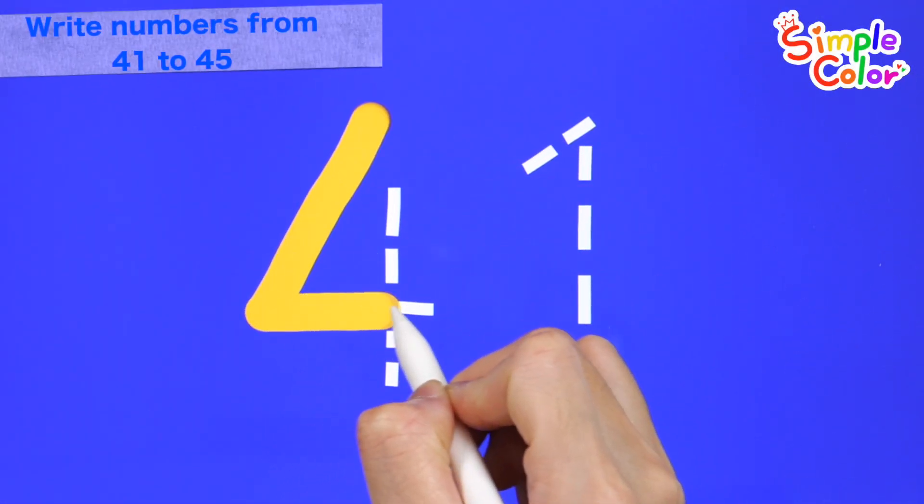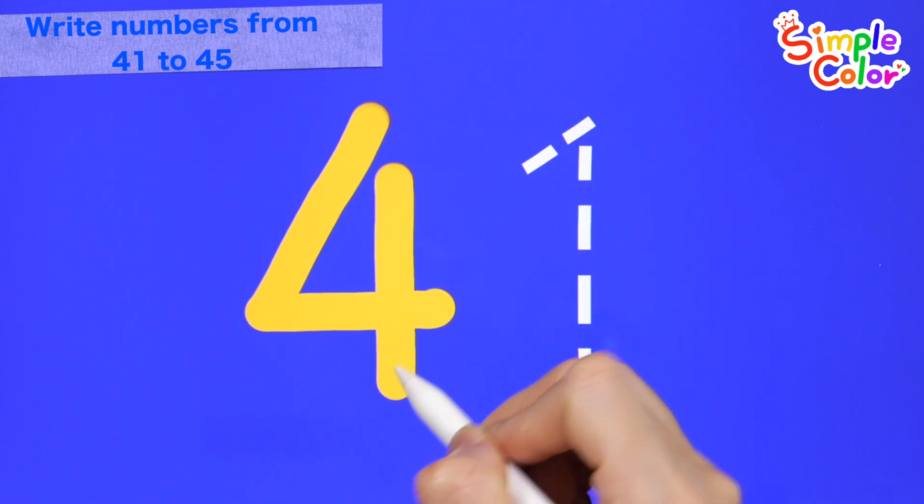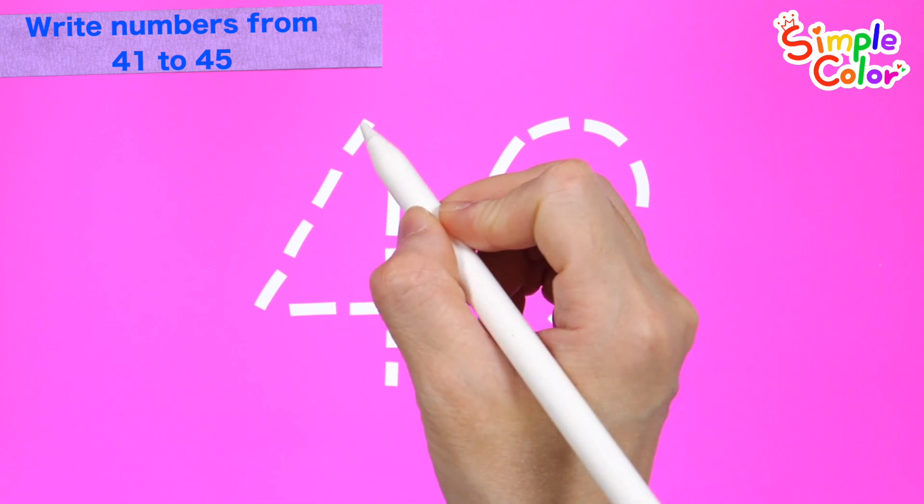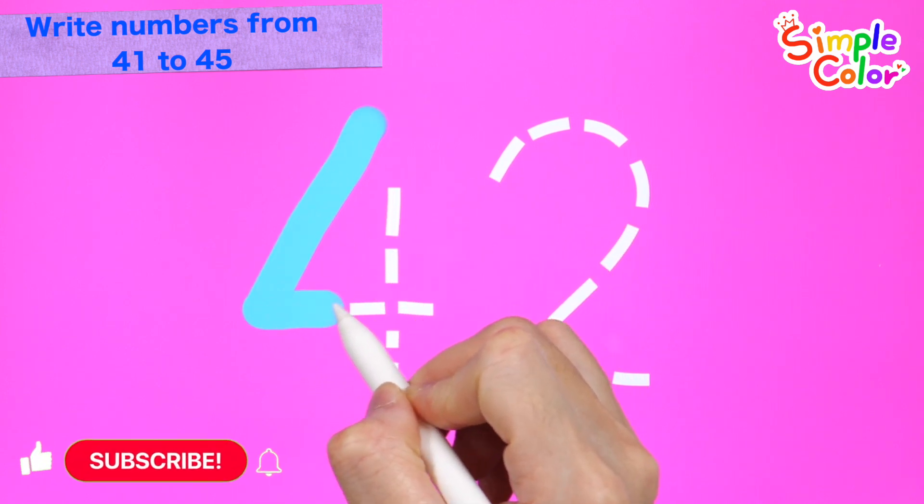Let's read it while writing the numbers along the dotted lines. 41. Let's write 42 in sky blue.